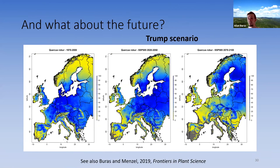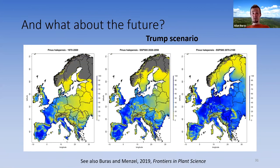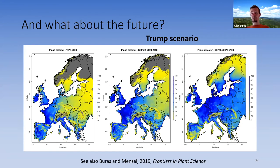If the four key German tree species vanish, which species are likely to survive? Mediterranean tree species: Pinus halepensis (Aleppo pine) and Pinus pinaster are projected to grow well under the extreme Trump scenario in Germany. This connects back to the earlier poll asking about preferred place of residence — under severe climate change, Germany could experience Mediterranean conditions.